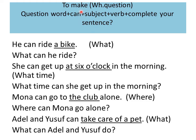How to make a WH question? Just start with the question word, then can, then the subject, the verb, then complete your sentence. Pay attention that we don't repeat the part that we are asking about.